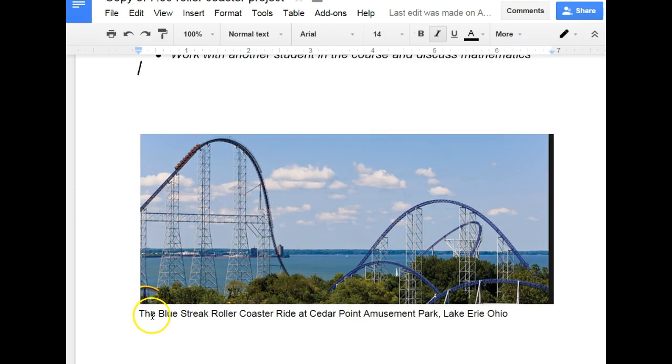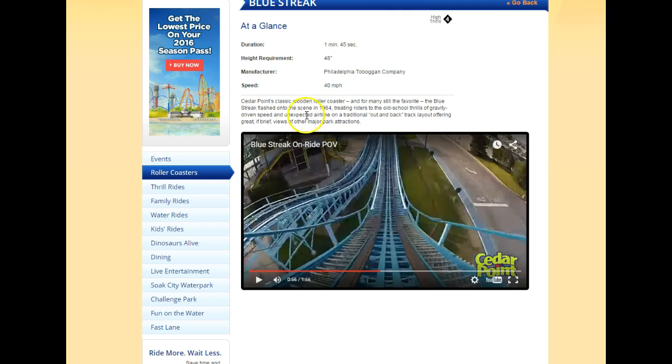Okay, so here's our roller coaster. This is a sample roller coaster and it's the Blue Streak roller coaster ride at Cedar Point amusement park. Ours is going to have the same type of physics as this.